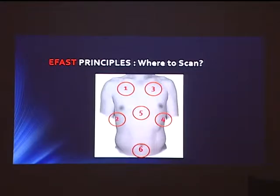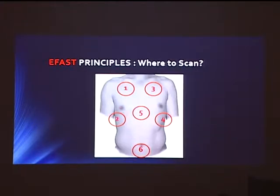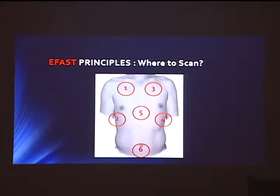In eFAST, there are six areas. You can do them in any sequence, but I think the most efficient approach is: start with the right anterior lung, then move your probe to the side to scan the lower part of the lung as well as Morrison's area — the right upper quadrant. Then proceed to the other side: left upper anterior, then the left upper quadrant — the lower part of the lung together with the splenorenal space. Then do the sub-xiphoid view, finally ending with the suprapubic pelvic view.